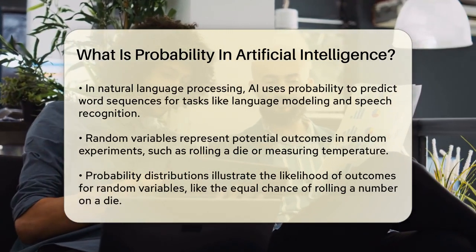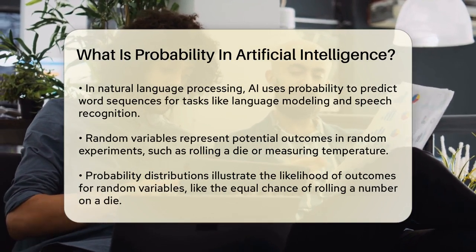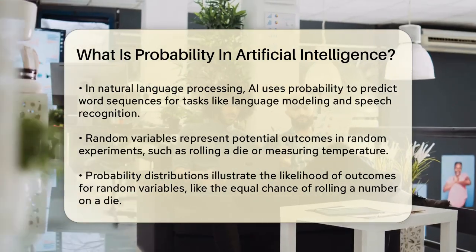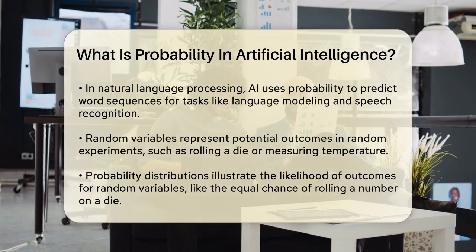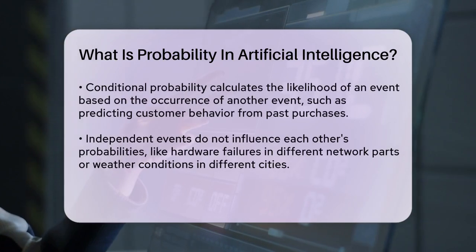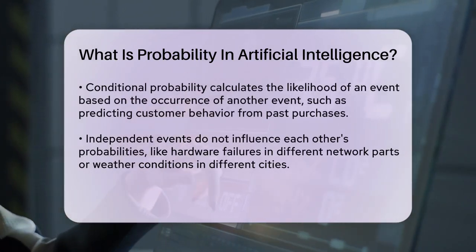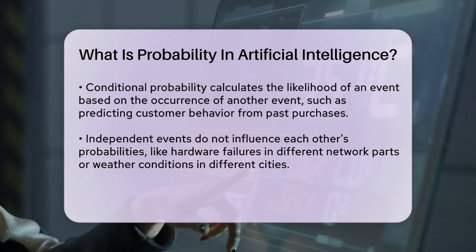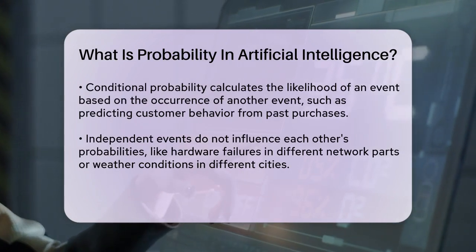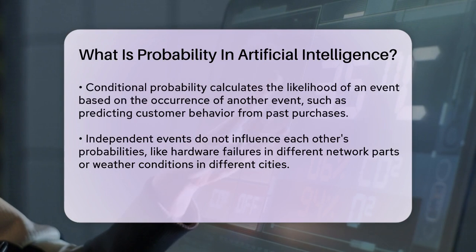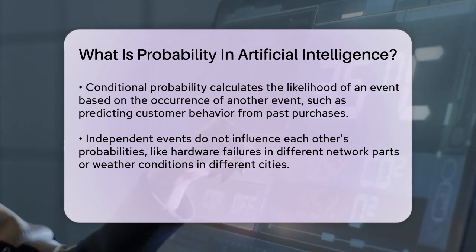Conditional probability is also vital in AI. This is the probability of one event given that another event has already occurred. For example, predicting customer behavior based on past purchases involves conditional probability. If a customer bought a certain product before, the AI can calculate the probability of them buying it again based on that past behavior.